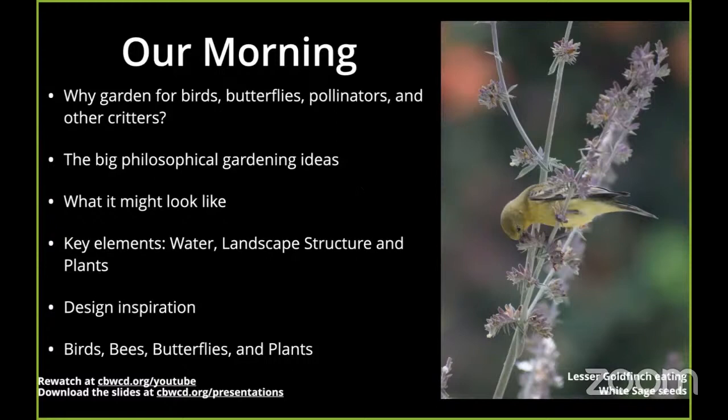We'll briefly look at some examples of what it might look like, depending on where you're coming from. We'll look at some universal key elements of habitat gardening, which include water, landscape structure, the combinations of trees, shrubs, lower plants, and then some plants themselves. Then after that, we'll move into some examples of design inspiration.